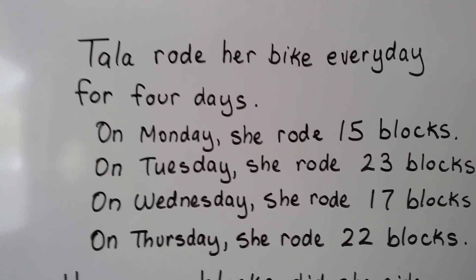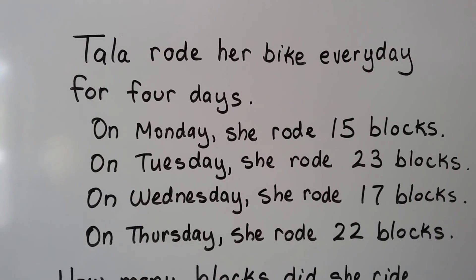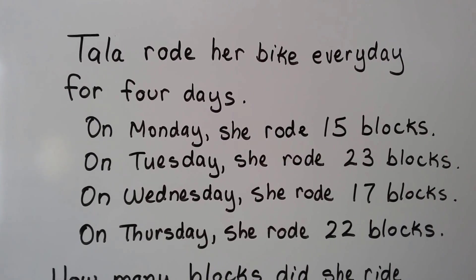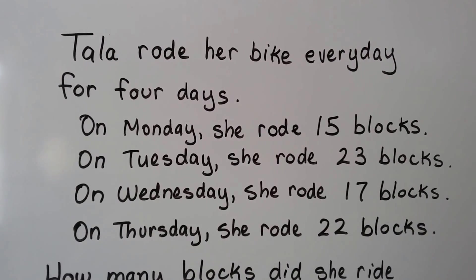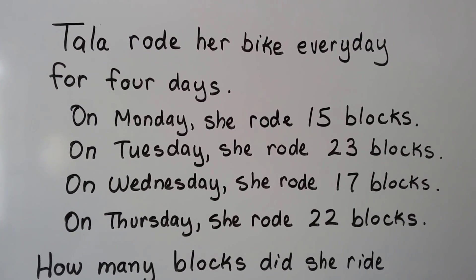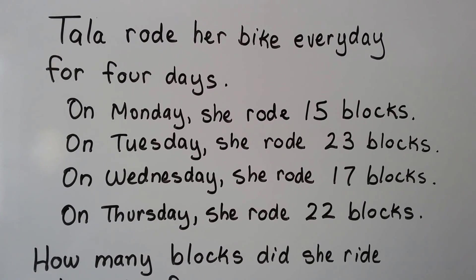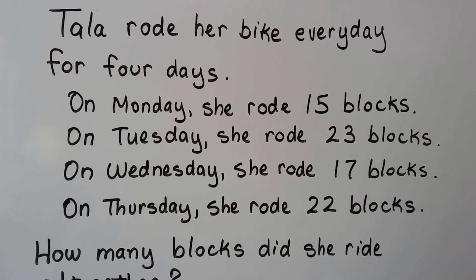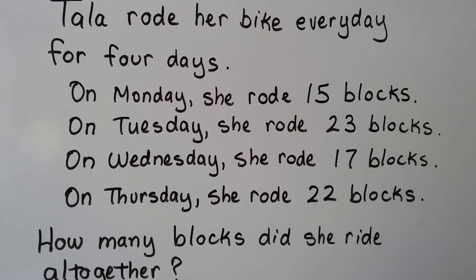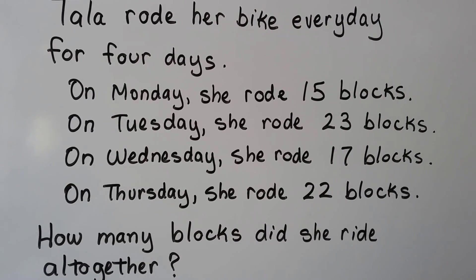Here's the first one. Tala rode her bike every day for four days. On Monday she rode for 15 blocks. On Tuesday she rode for 23 blocks. On Wednesday she rode for 17 blocks and on Thursday she rode for 22 blocks. How many blocks did she ride all together?